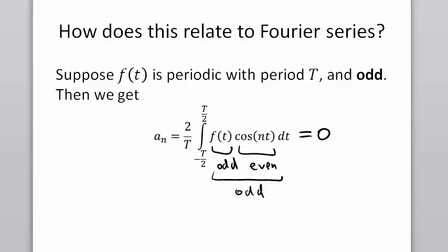So just to recap, if we have an odd function f, we're calculating an, we know automatically that that must be equal to 0.